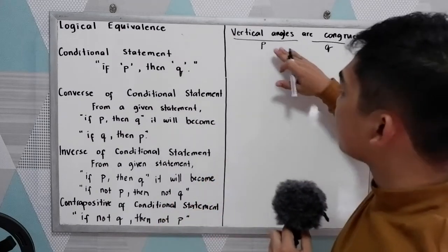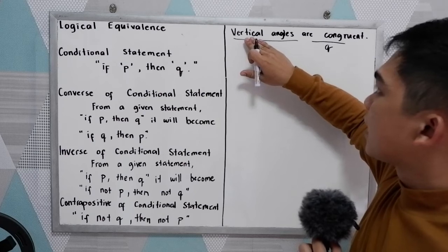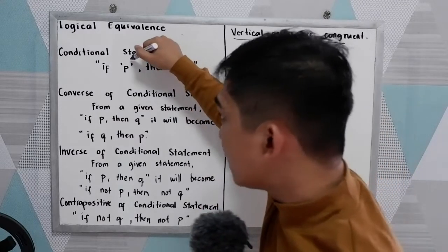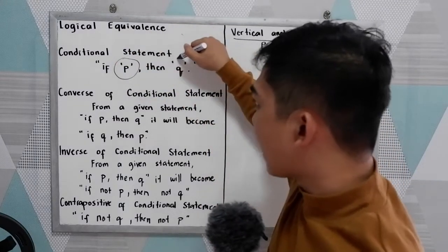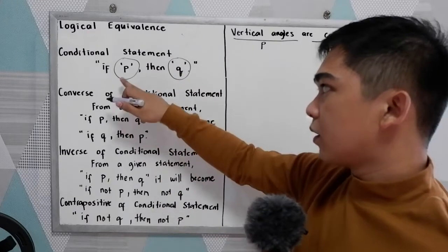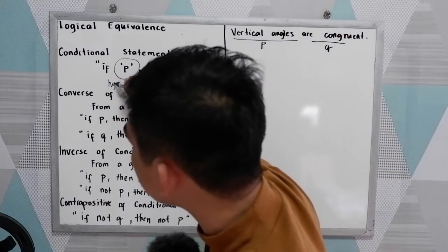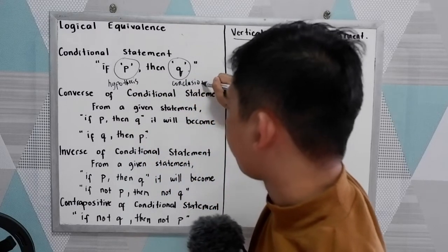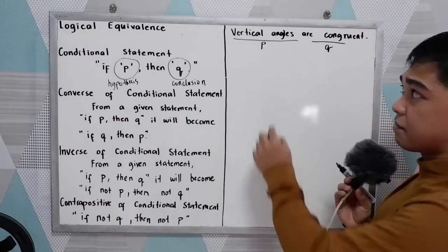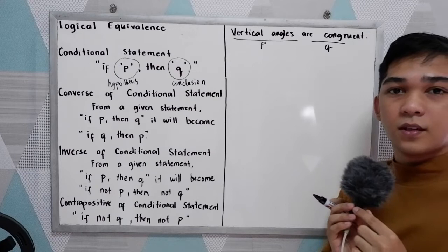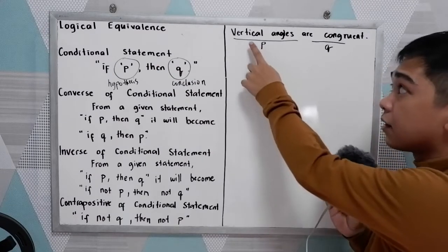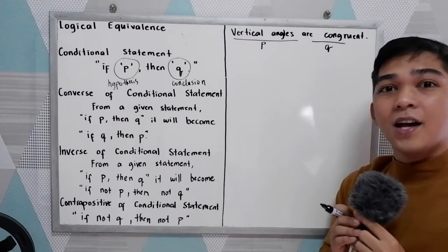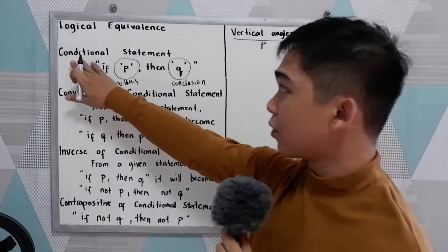So let's say our general statement is: 'Vertical angles are congruent.' Of course, first you need to determine or analyze p and q, where p is our hypothesis and q is our conclusion. In our general statement 'vertical angles are congruent,' our hypothesis is 'vertical angles' and the conclusion is 'are congruent.'